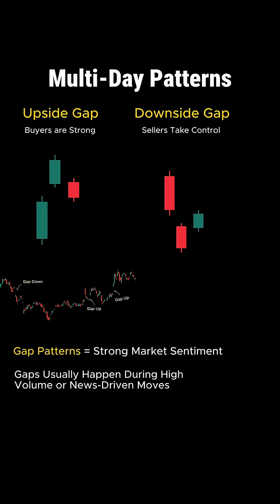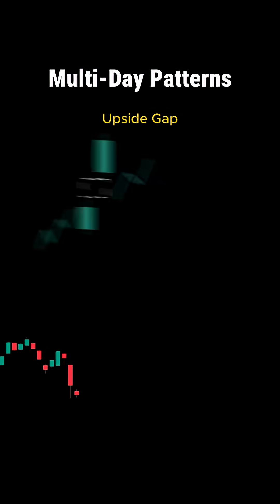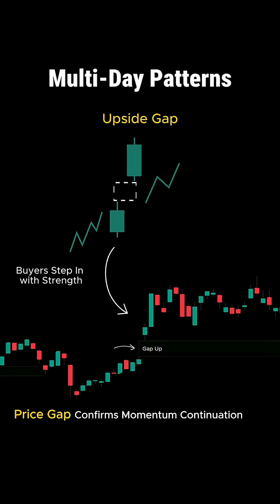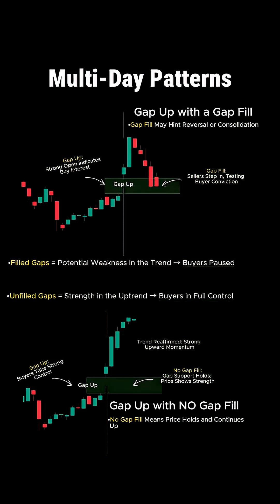Next up is gaps — upside or downside gaps. Gap patterns show conviction. You'll see these when a candlestick opens significantly higher or lower than the last candle's close, leaving a very visible space or gap. With bullish gaps in an uptrend, buyers are stepping in hard, pushing prices higher and reaffirming the trend. With bearish gaps in a downtrend, sellers are still driving prices lower with no sign of hesitation. If the gap doesn't immediately fill by retracing or pulling back, that's a strong signal that the current trend is holding its ground.